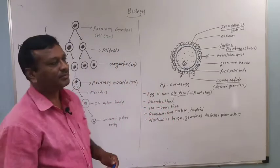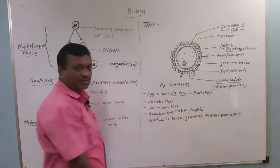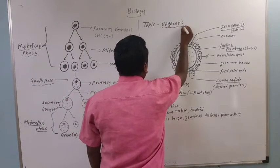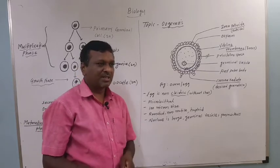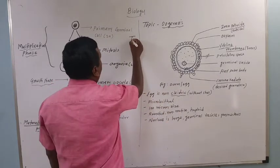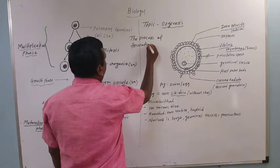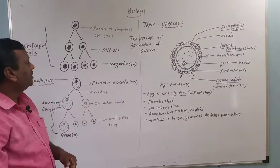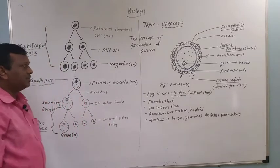Good morning students, hi everyone. Today's topic is the process of oogenesis. Oogenesis means the process of formation of ovum or egg cell, or female gamete from the primary germinal cells with the help of meiosis process — that is known as oogenesis.